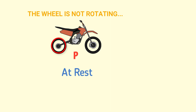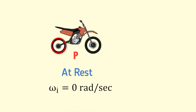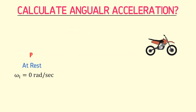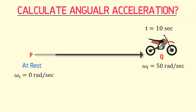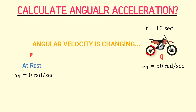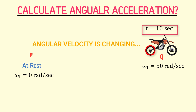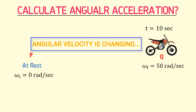The initial angular velocity of the wheel, omega i, is equal to 0 radians per second. The bike then starts moving, and at point Q we note that the final angular velocity of the wheel, omega f, is equal to 50 radians per second. The bike takes 10 seconds to move from point P to point Q, so the angular velocity changed from 0 to 50 radians per second in 10 seconds.